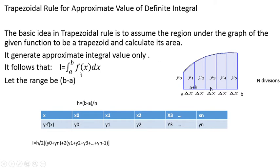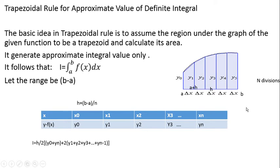This is the integration form: integral from a to b of f(x) dx, where a is the lower limit, b is the upper limit, and f(x) is the given function. We consider the graphical representation of f(x), assume a trapezoidal structure under the region, and find the area of that trapezoid — it will approximately match the integral value. Here, b minus a gives the range.